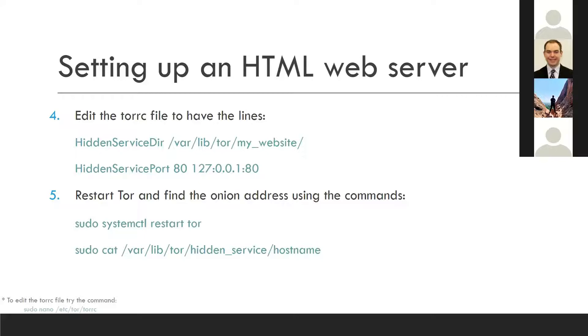To find your onion address, use the command 'sudo cat /var/lib/tor/hidden_service/hostname'. This outputs your hostname, which is your onion address. Enter that into the Tor browser and you can connect to your hidden service.